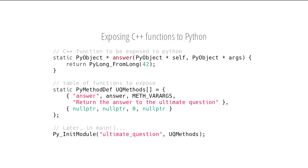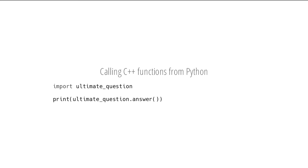To do the converse — C++ code callable from Python — you define a function like 'answer' which returns 42, then set up a table of functions you want to expose to Python with their names and doc strings. Later, you call PyInit_Module with the module name and a pointer to that table. That means in our Python code we can import the 'ultimate question' module and print out the answer, which comes from the C++ side.